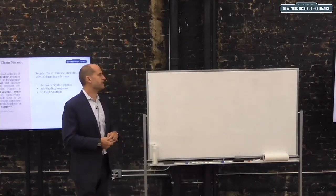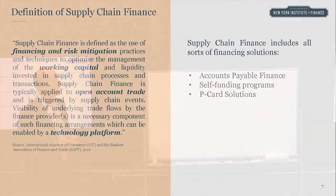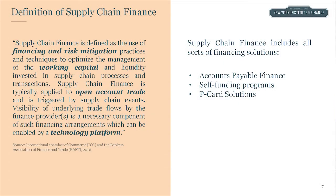Supply chain finance, from my perspective, includes several financing solutions. One is accounts payable financing. The second is self-funding programs, where the buying organization acts as a financial institution, using its own cash flow to provide financing to their suppliers. The third is payment card solutions, or P-card solutions, offered by all the credit card issuers. I will go into detail for each single solution in this session.